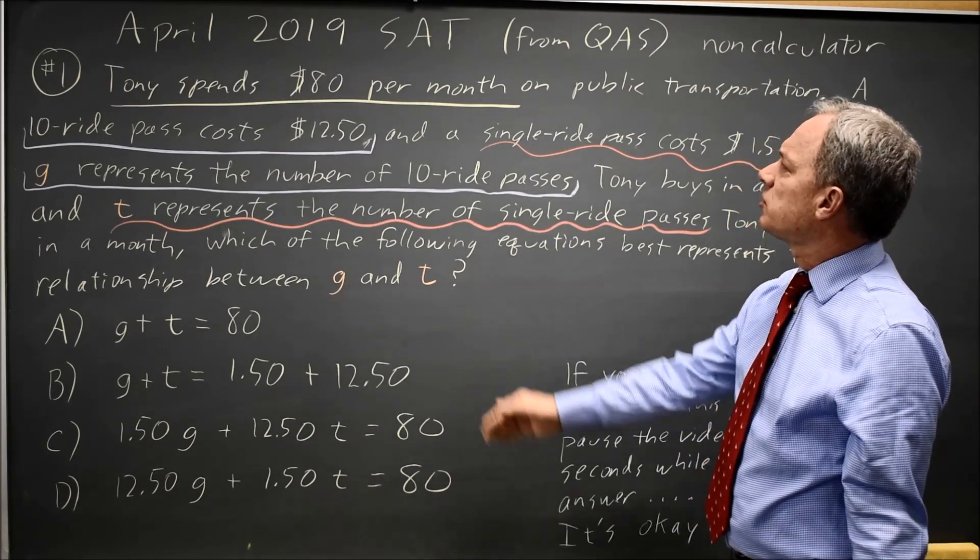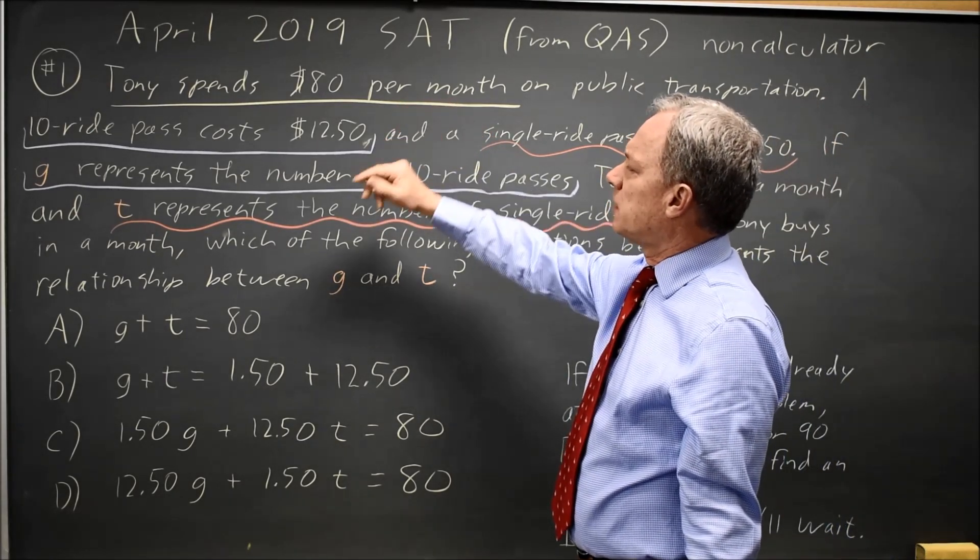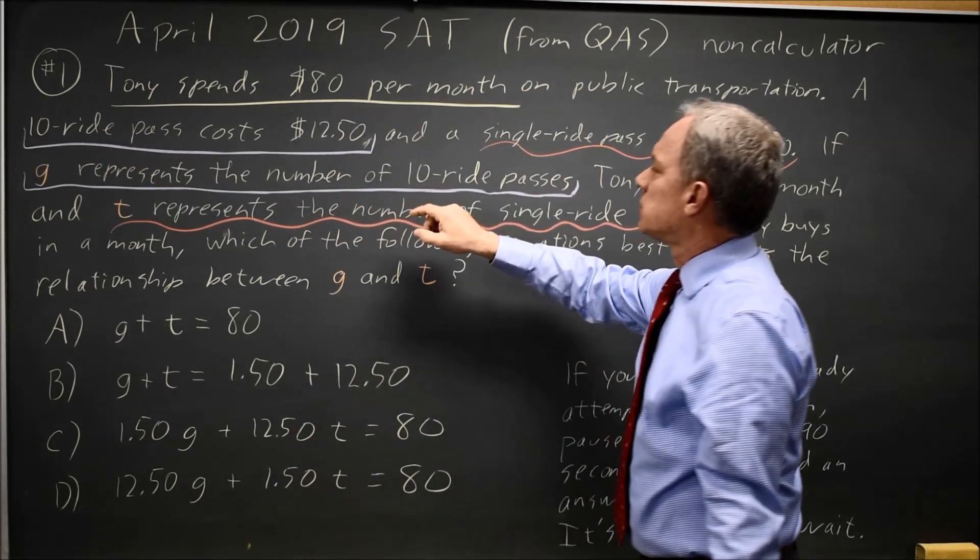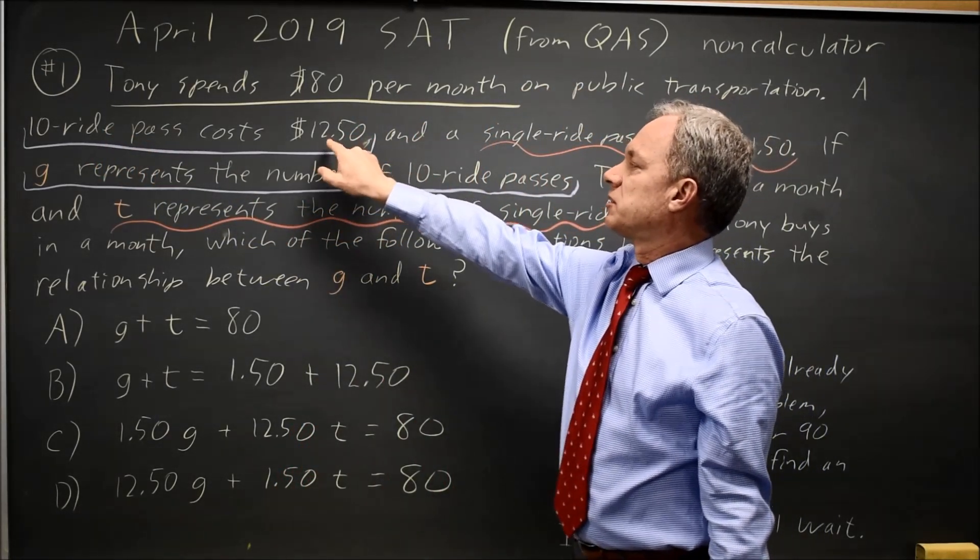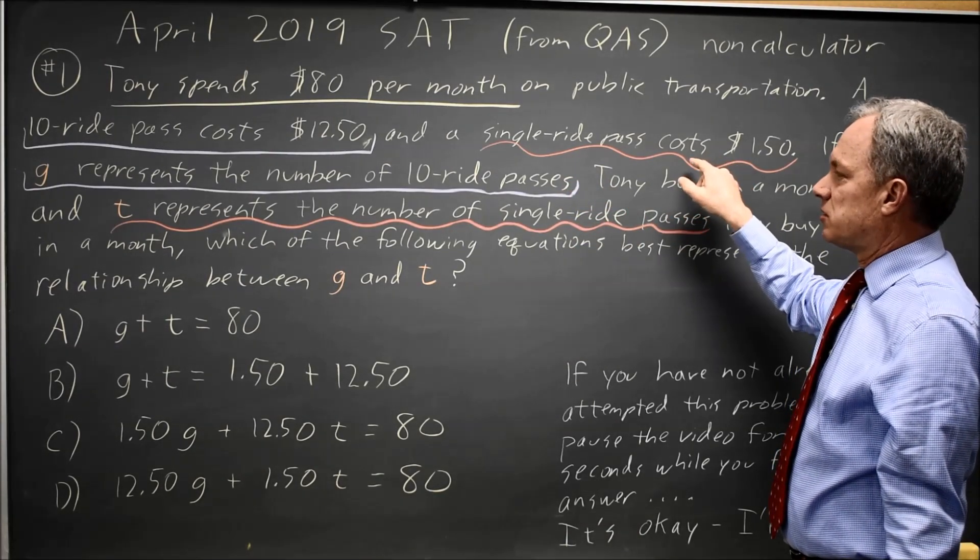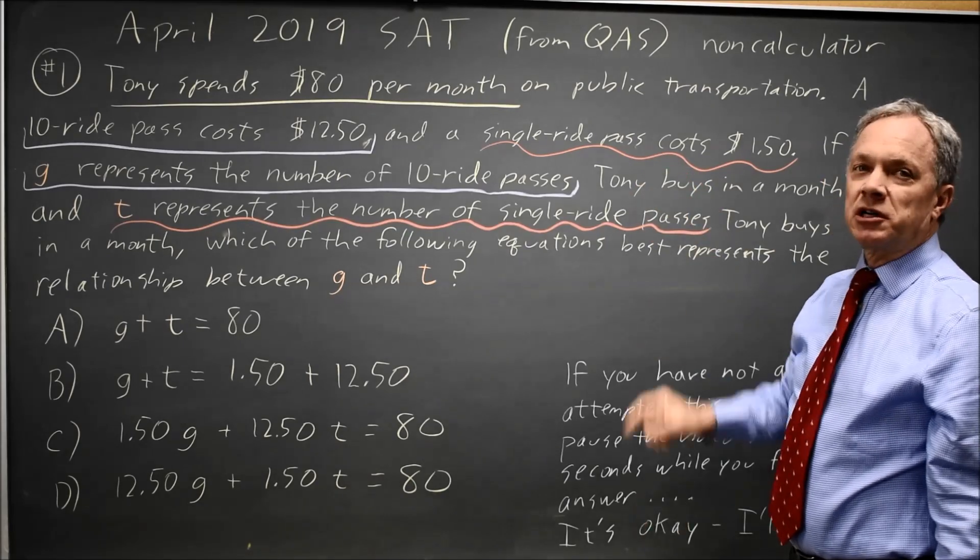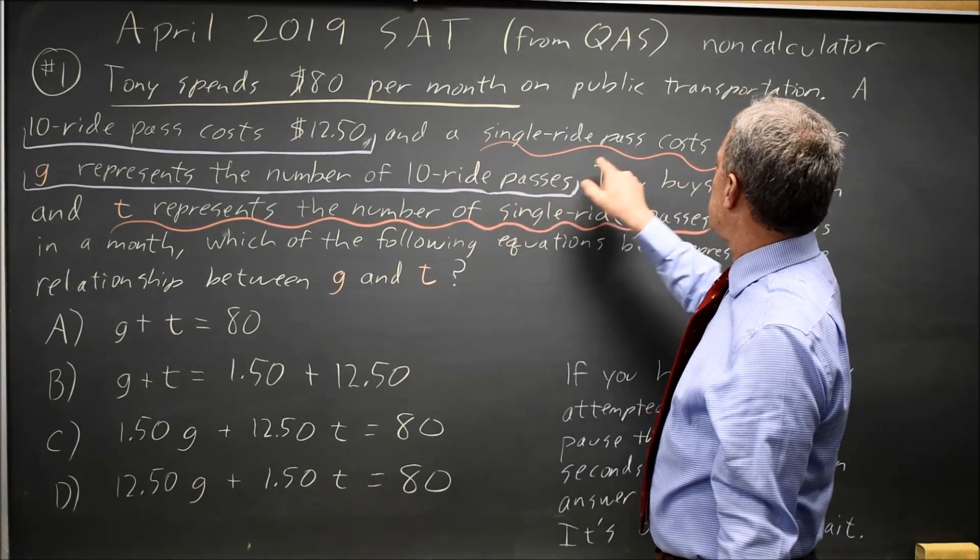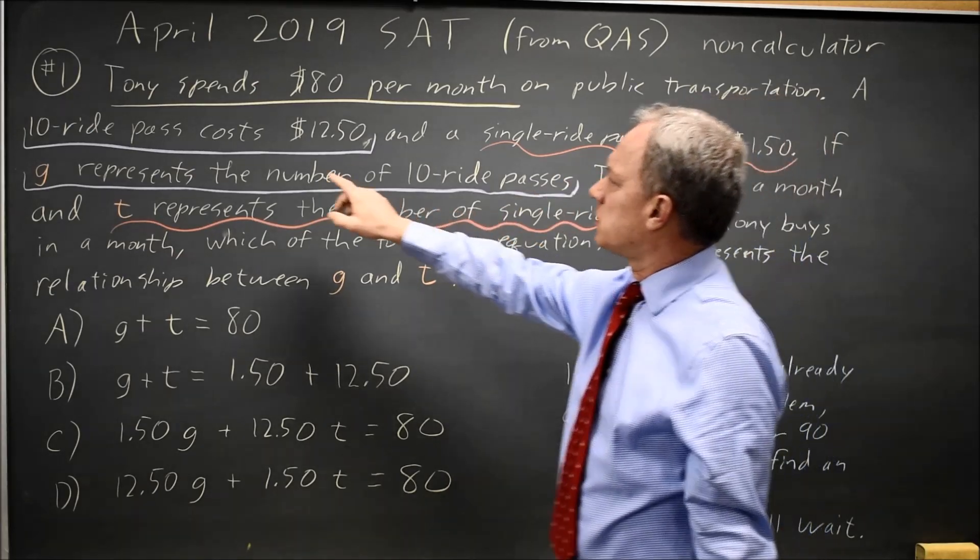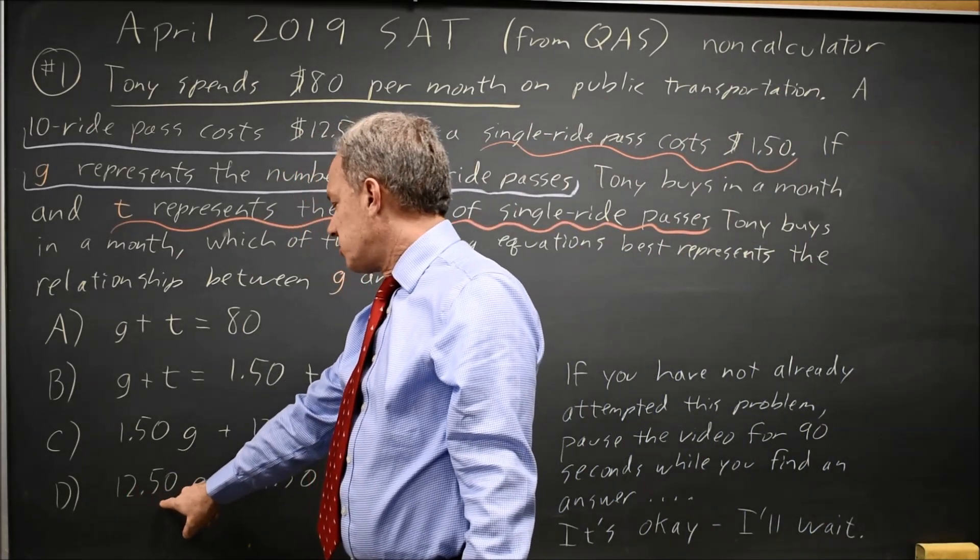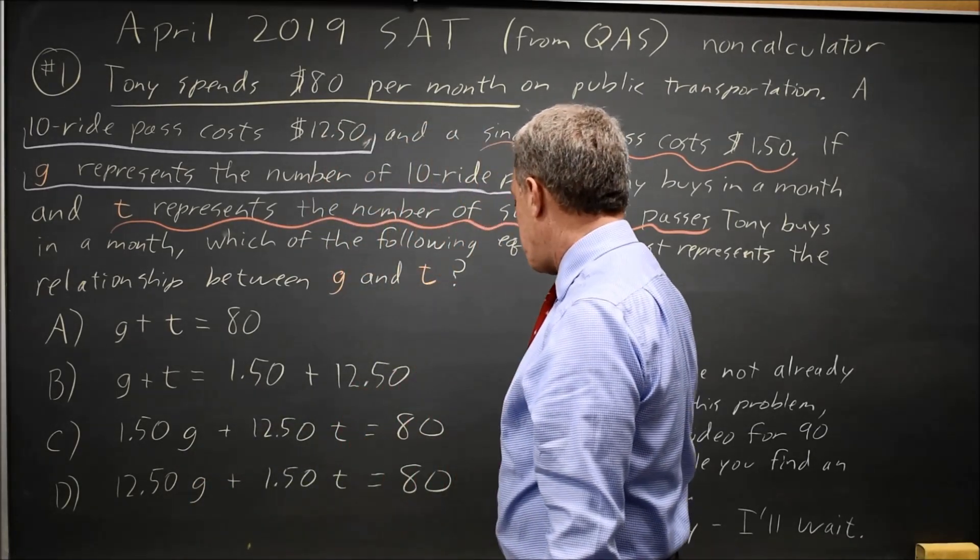Since the total spent is $80, and the total spent is G times the cost of ten ride passes—so the number of ten ride passes times their individual cost—plus the number of single ride passes times the cost of each of those, those two quantities should be equal. So $80 equals T times $1.50 plus G times $12.50, and this last choice is $12.50G plus $1.50T.